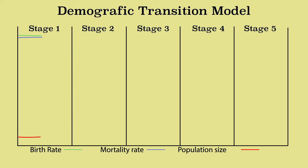If a country is very poor and hardly developed, both the birth and the mortality rate will be very high. This is phase one. The mortality rate can reach 40 and the birth rate even something higher. This means that an average of 40 people die each year per thousand inhabitants, because healthcare is still poorly developed. People have many children so they can take care of the parents when they are old, and there are still few contraceptives available. Nowadays, there are actually no countries anymore that meet this description.